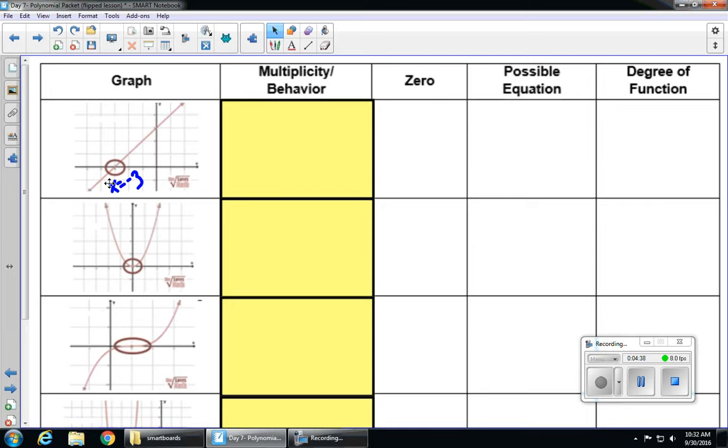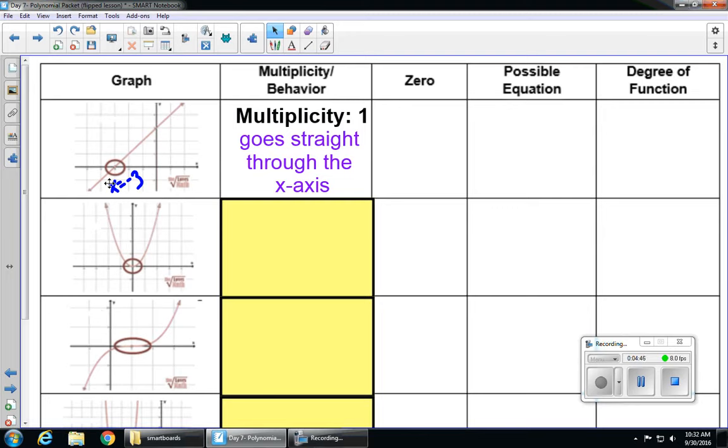Since this passes straight through the x-axis, it has a multiplicity of 1. So anytime we see something going straight through, we know that it has a multiplicity of 1.